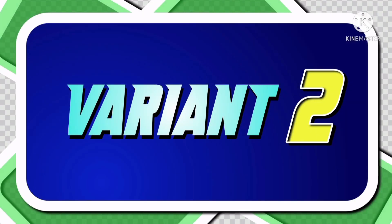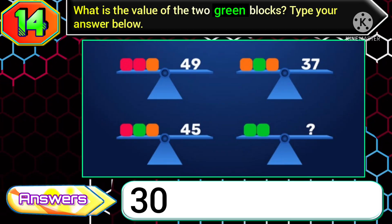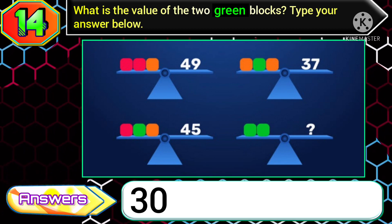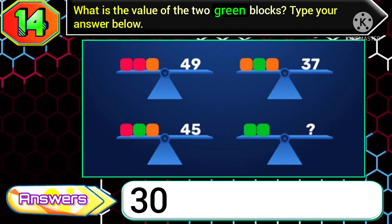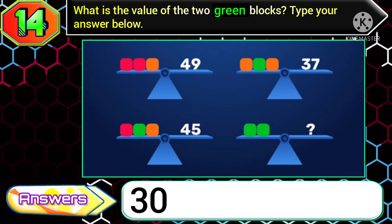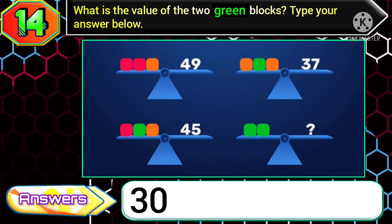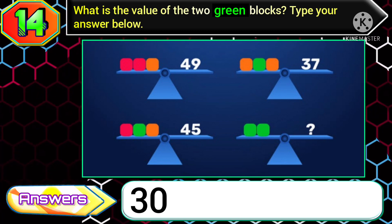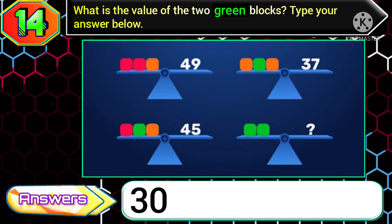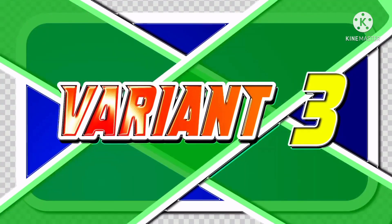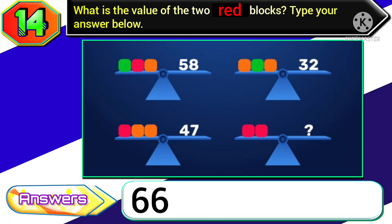Next, in variant 2 of this question, if they ask: what is the value of the two green blocks, and if you get the numbers as 49, 37, and 45, then you need to type the answer 30. At last, in variant 3 of this question, if you get the question: what is the value of the two red blocks, and if you get the numbers as 58, 32, and 47, then you need to type the answer 66.